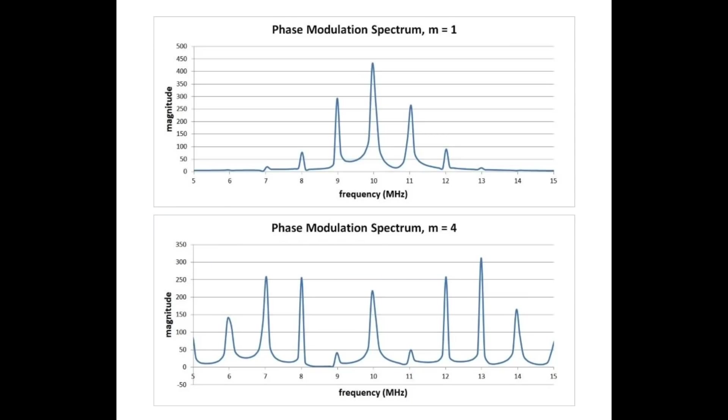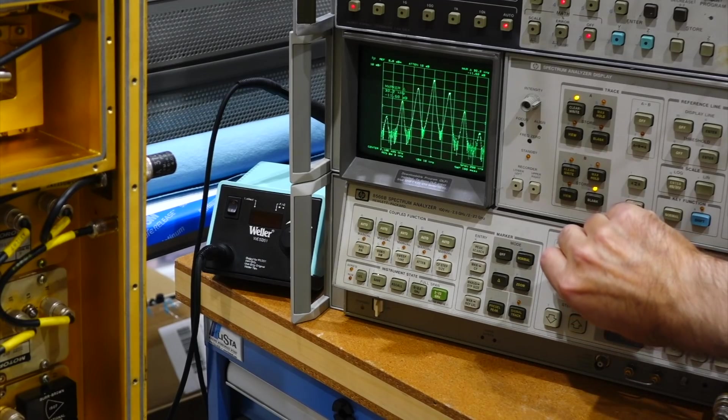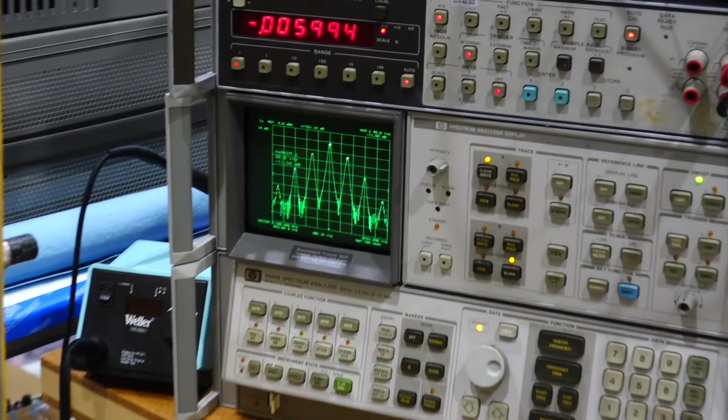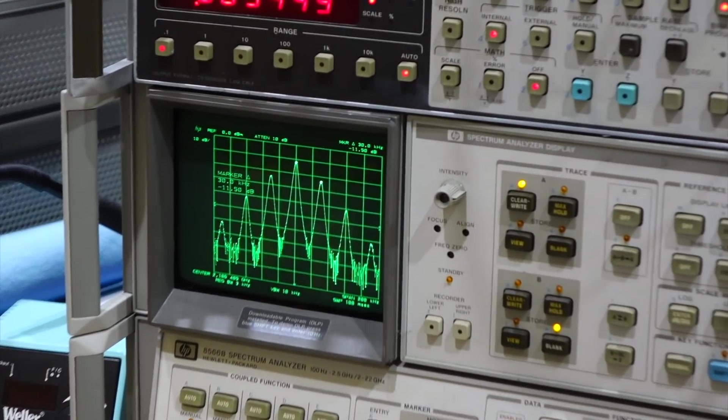It varies depending on the modulation index M. Here are two spectra, one for M equals 1, and one for M equals 4. We actually use this property to our advantage when we retune our transmitter. We simply adjusted it until we got the right sideband content.